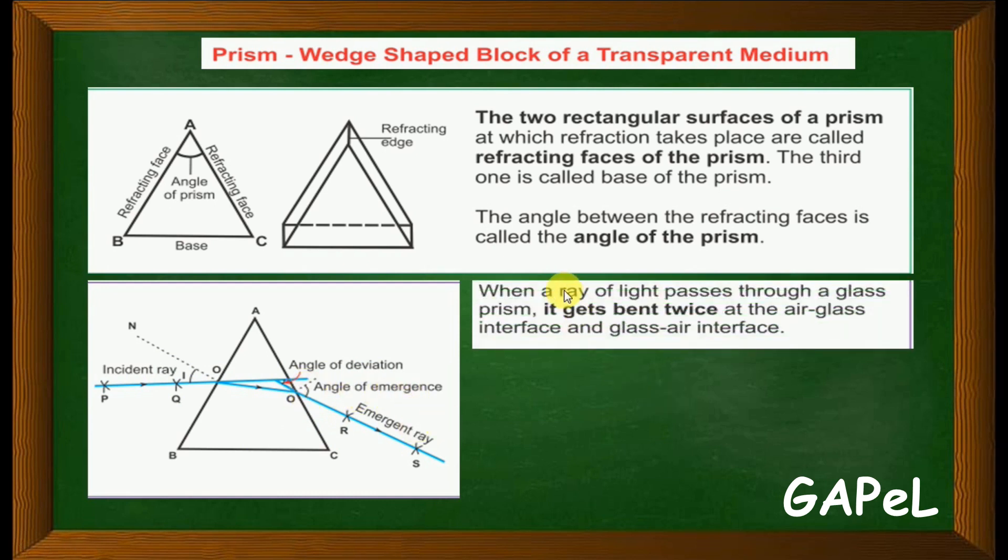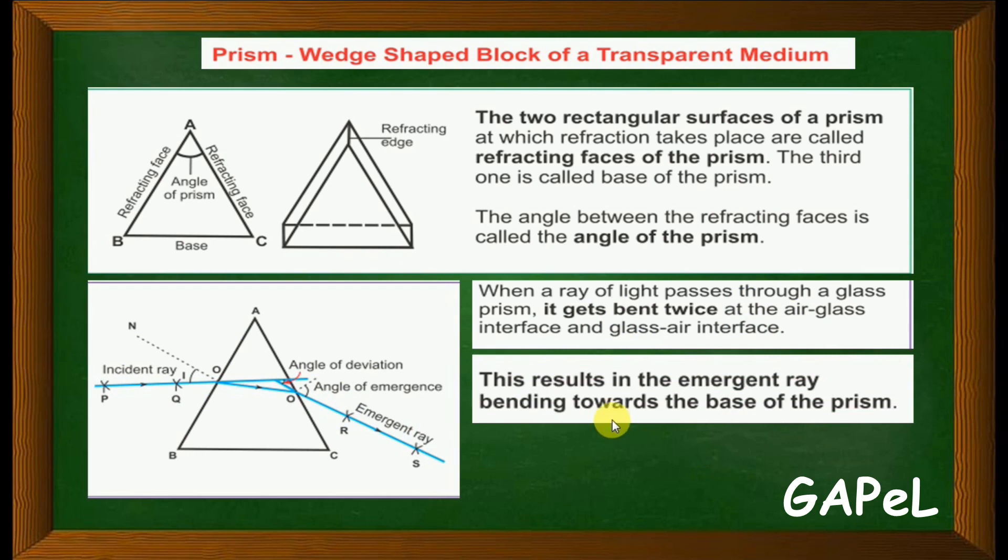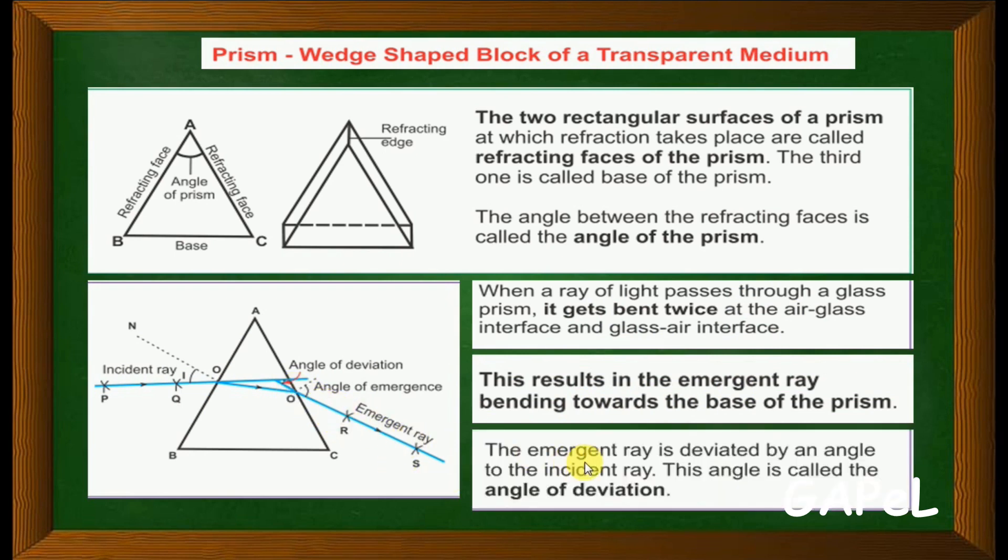When a ray of light passes through a glass prism, it gets bent twice - at the air-glass interface and the glass-air interface. This results in the emergent ray bending towards the base of the prism. The emergent ray is deviated by an angle to the incident ray. This angle is called the angle of deviation.